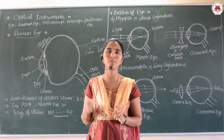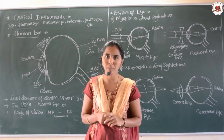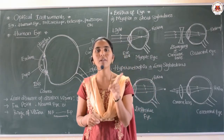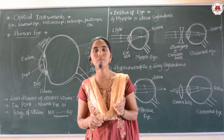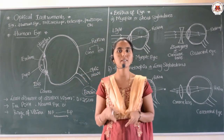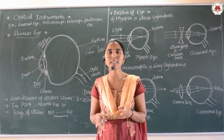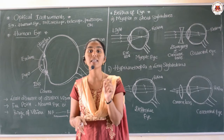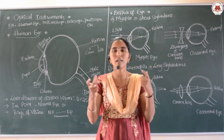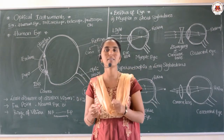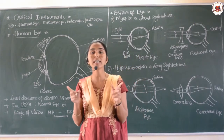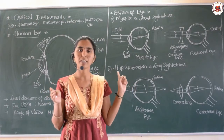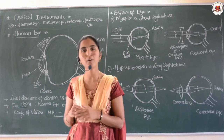In the human eye, we can identify two spots. One is the blind spot, which is the less sensitive part of the human eye - whatever we observe there will not be sensed easily. The other is the yellow spot, which is the more sensitive part of the human eye.